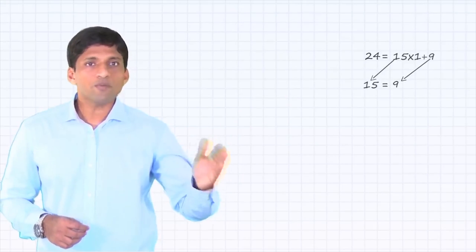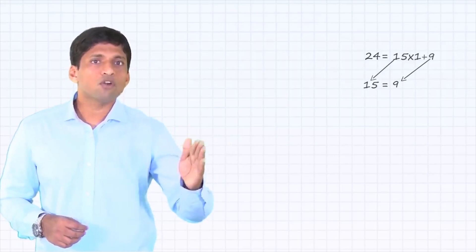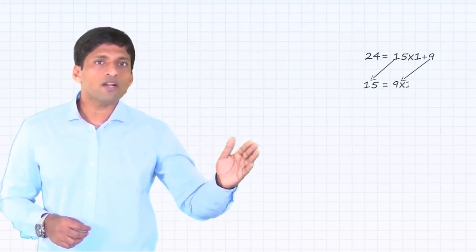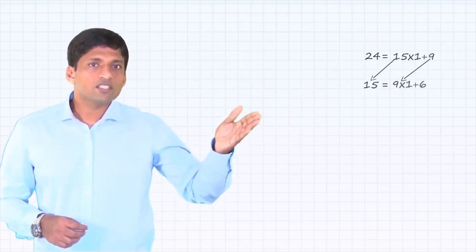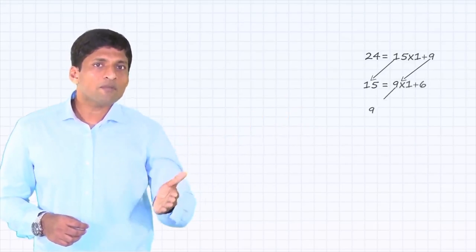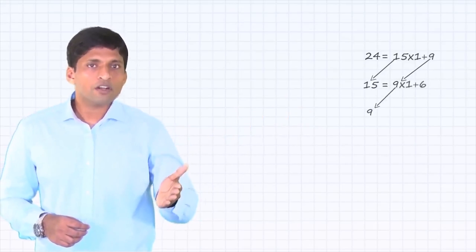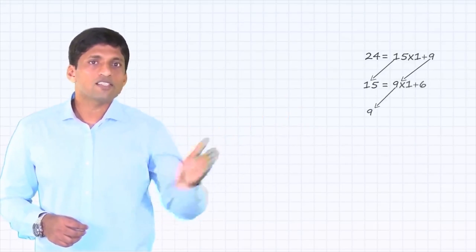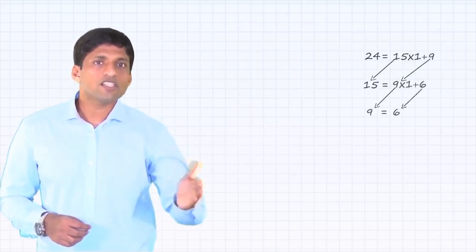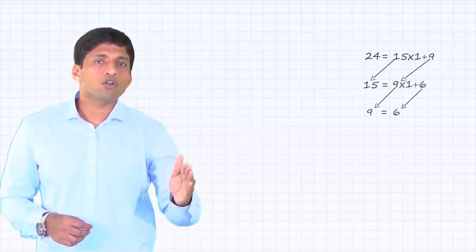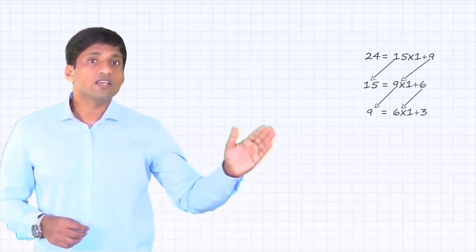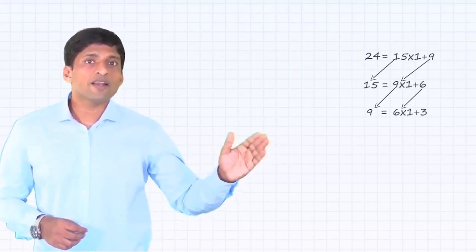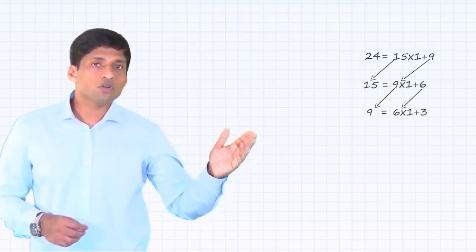So what is the next step? 15 = 9 × 1 + 6. Then this 9 will become the dividend and 6 the divisor. So 9 = 6 × 1 + 3. There is still a remainder of 3.